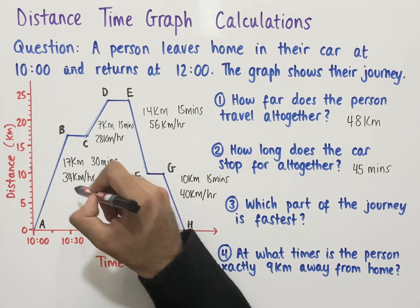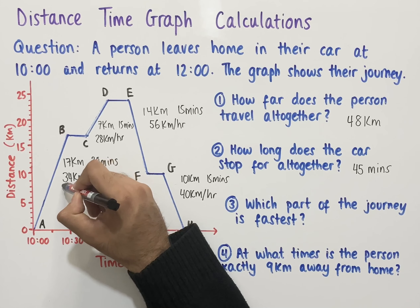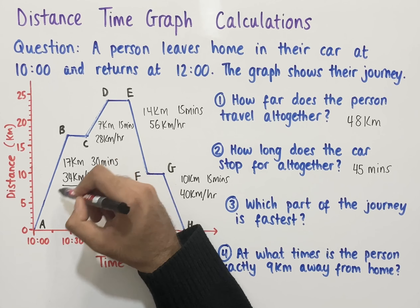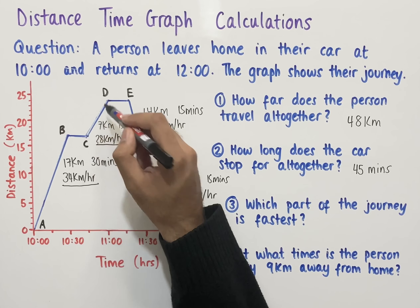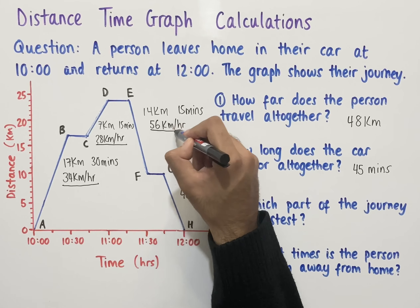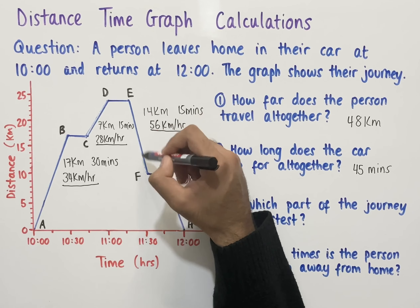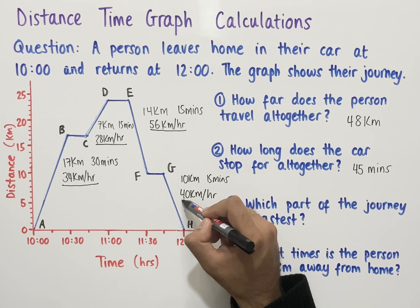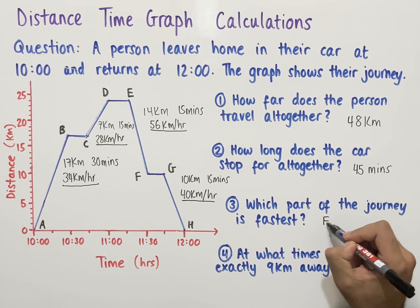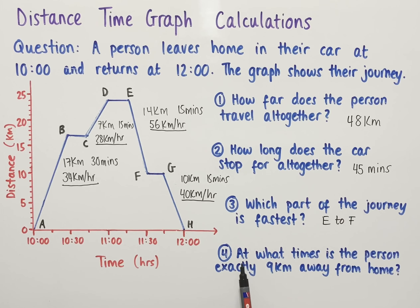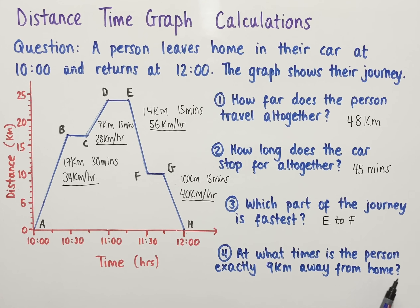To work out which part of the journey is fastest: A to B is 34 km/h, C to D is 28 km/h, E to F is 56 km/h, and G to H is 40 km/h. The fastest part of the journey is therefore E to F. The final question asks: at what times is the person exactly 9 kilometers away from home?